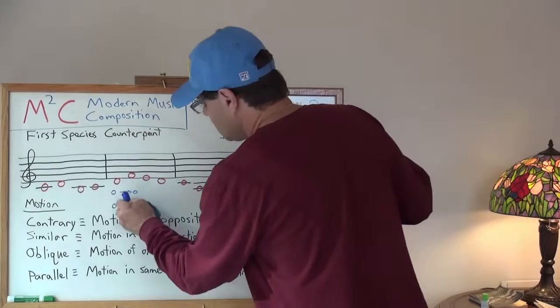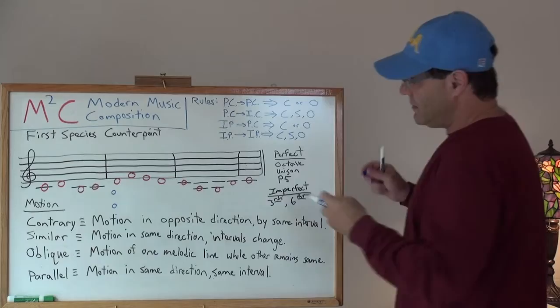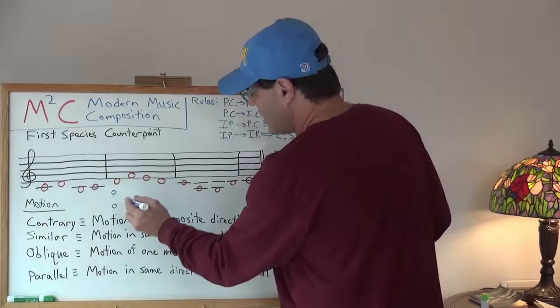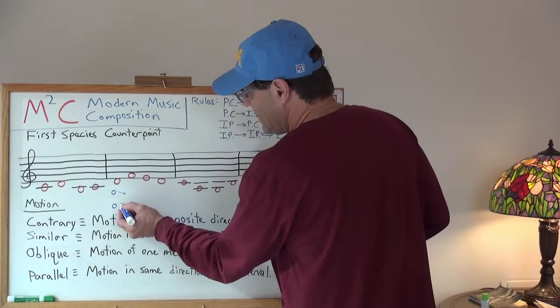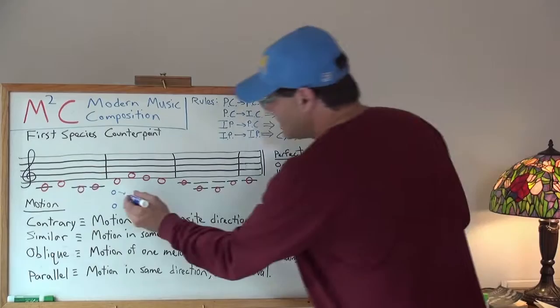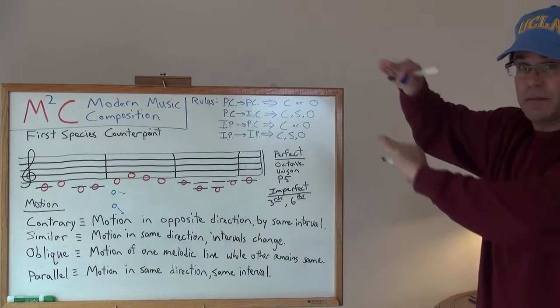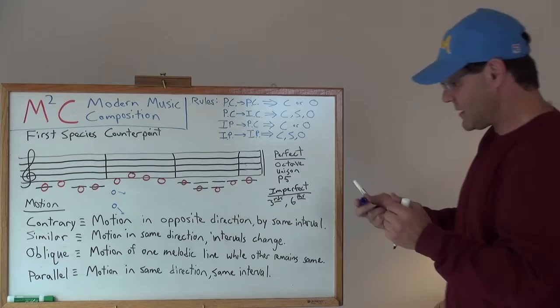Similar motion means I don't have to follow the same interval for both of those. In other words, in contrary motion, if I go down two semitones, I got to go up two semitones. Or if I go down a second, I got to go up a second. Here I could go down a second and then up here. Similar motion would be going down a second here and then maybe going down a third here. So it's almost kind of like a little bit of a roller coaster down with differences in the slopes. That's how I look at it.